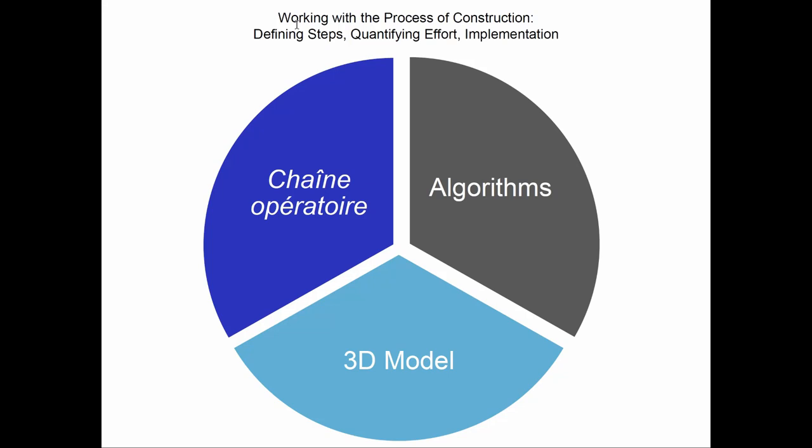This building I focused on, and my approach to the analysis of the architecture has three parts. First, a chain operatoire to define the steps of construction. Then algorithms to quantify the energy needed. And finally, a 3D model to give the volumes of the build space — the data for the specific building.